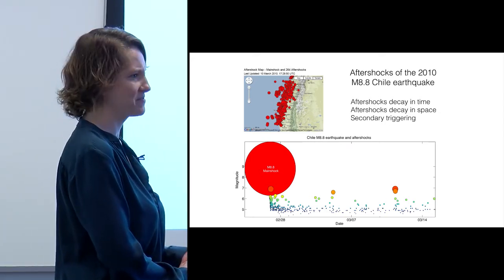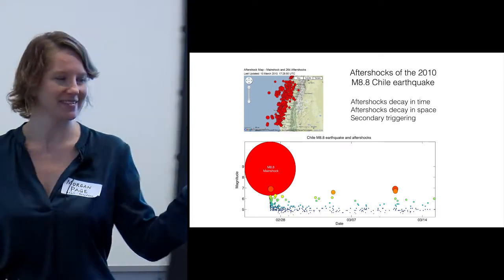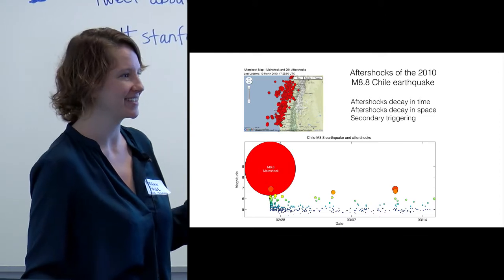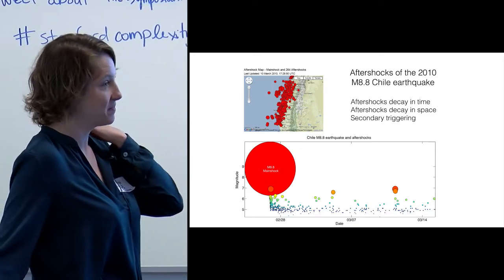Were there really nothing before that big main shock, or is that just... That's my plot. I think there probably were foreshocks. Most earthquakes have foreshocks. Yeah, that's my plotting. That's a good point. And I'll get to foreshocks later, because that's the name of the game for increasing our ability to forecast how the probabilities change.